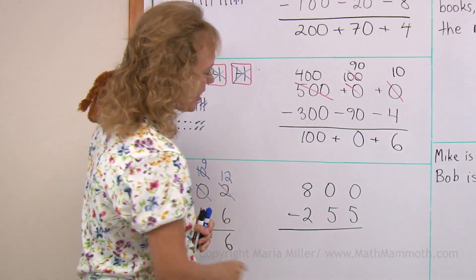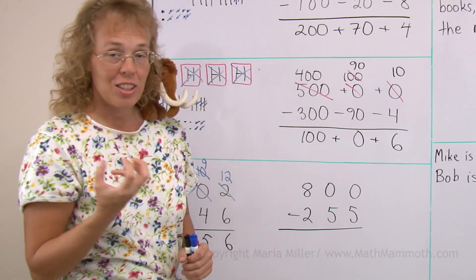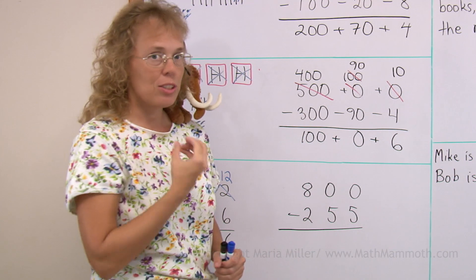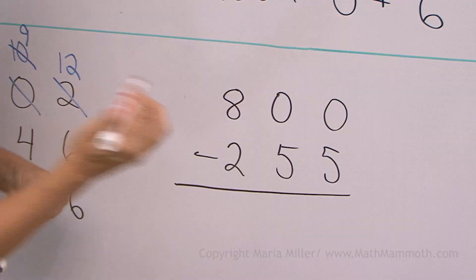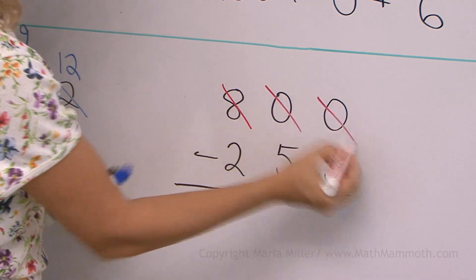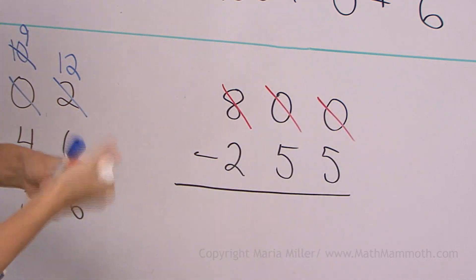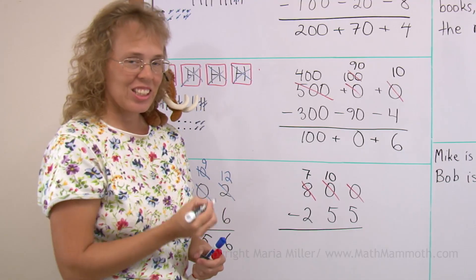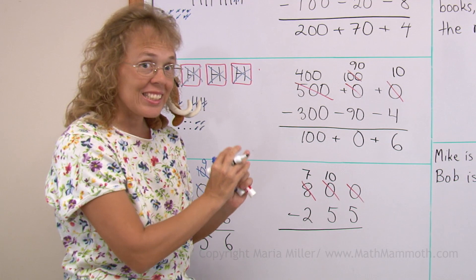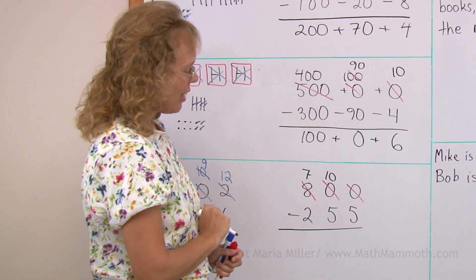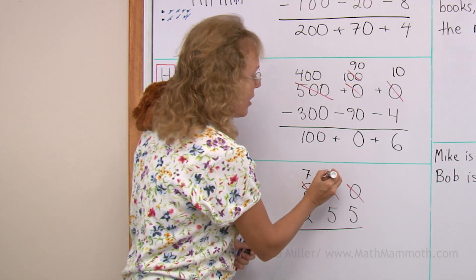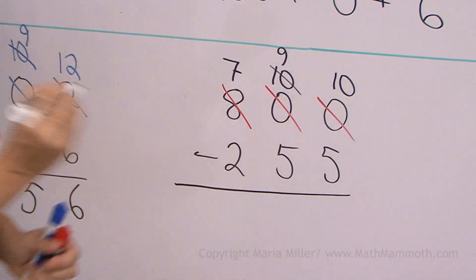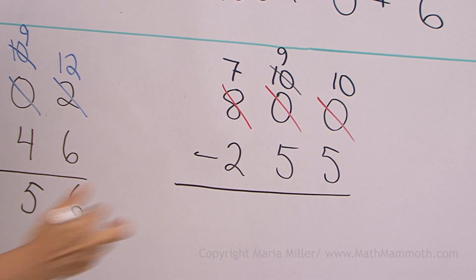Again, zero minus five. I cannot do that, so I need to regroup, but there are no tens. So therefore I'll go straight to the hundreds and I regroup one of the hundreds. And basically this will be gone, this will be gone, this will be gone, if you want to cross those all out. I will have seven hundreds left and I will get ten tens in the tens column. Because one hundred is ten tens, and this is tens column. Then however, I need to immediately take one of the tens, leaving nine tens, and move that as ten ones into the ones column. Now I'm ready to subtract.